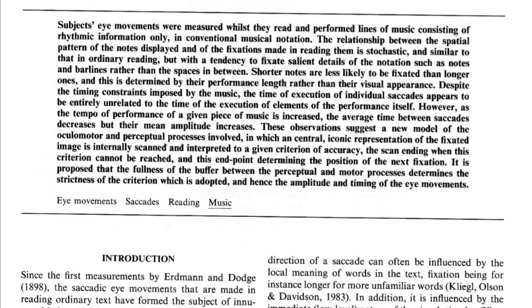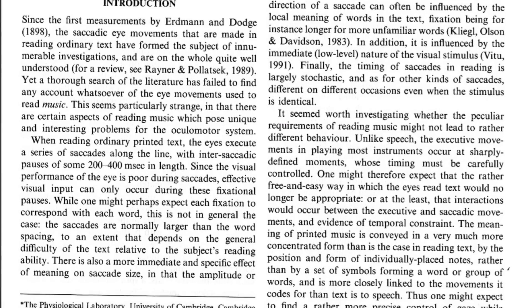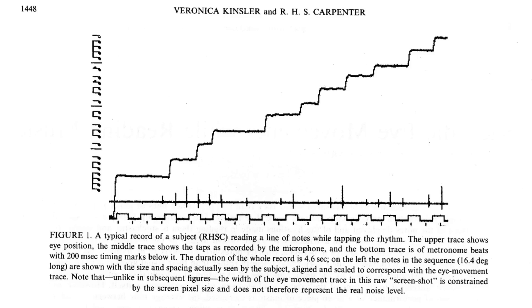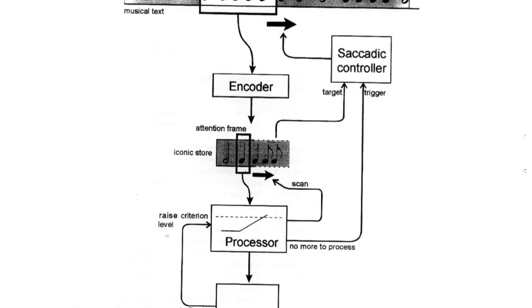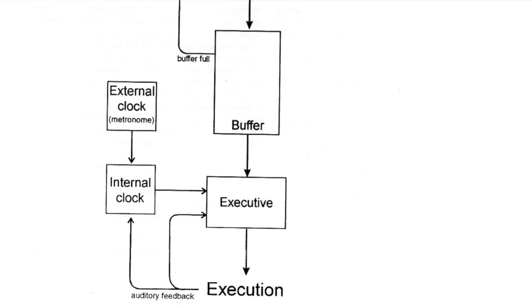We've known about saccades since roughly the 19th century, but only recently have researchers found that we actually process musical information the same way. A recent study had musicians read and perform rhythms while a computer tracked their eye movements. You can see here this great graph of the findings — the subject moving his eyes between different parts of each measure as he's executing the rhythm. There's something called the perceptual span, or the eye-hand span, which describes the amount of time between reading a piece of information and then executing it. A lot of musicians, especially trained piano accompanists, will actually be reading four or five measures ahead of where they're actually playing. The study calls this the buffer, where music is held for later performance.